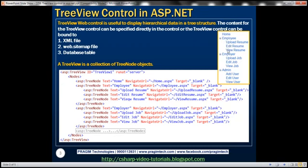We want to configure this TreeView control to produce an output that represents the logical structure of a website. At the root level we have Home, Employee, Employer, and Admin pages. And under Employee, Employer, and Admin we have three more pages each.